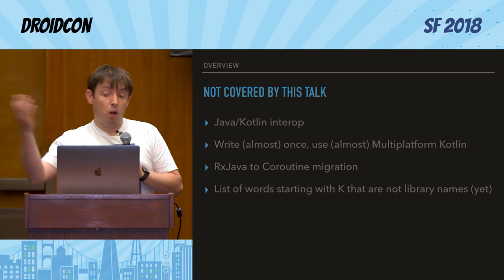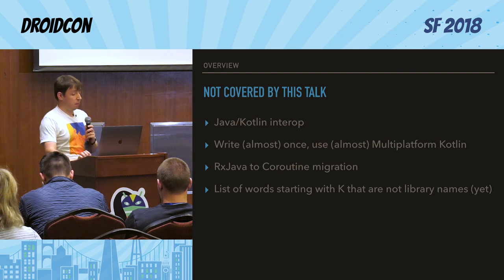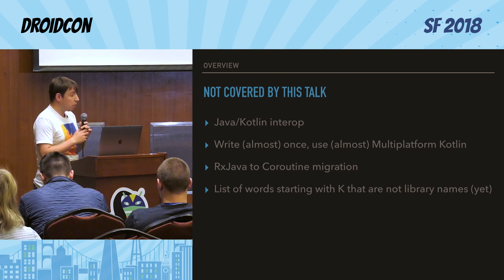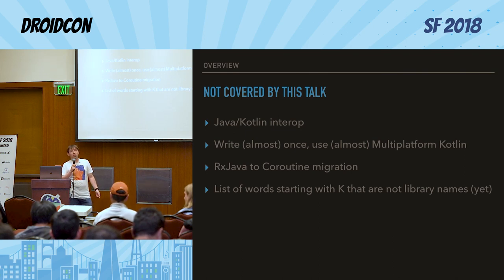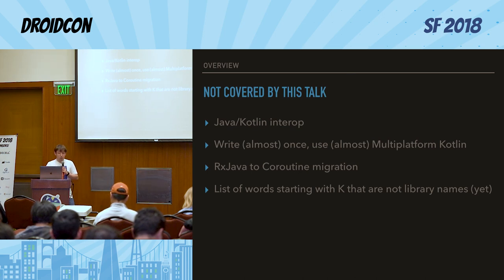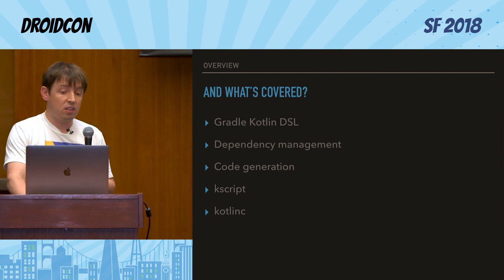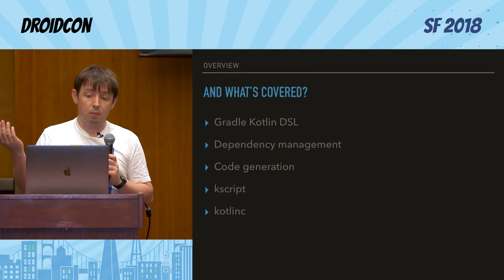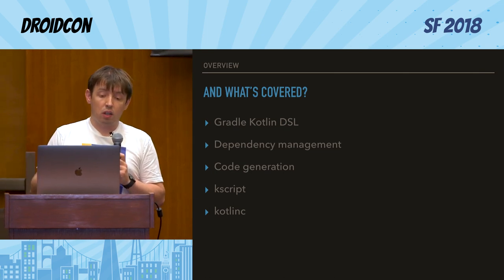Instead of talking about some obvious stuff, I'd like to talk about some more unique stuff — some findings I made mostly during my moonlighting on a few pet projects. I even have a t-shirt with my best code reviewer, who does it while I'm doing my Kotlin experiments at night. So let's move to the next slide and show what's actually covered: Gradle Kotlin DSL, dependency management, code generation, and Kotlin scripts.